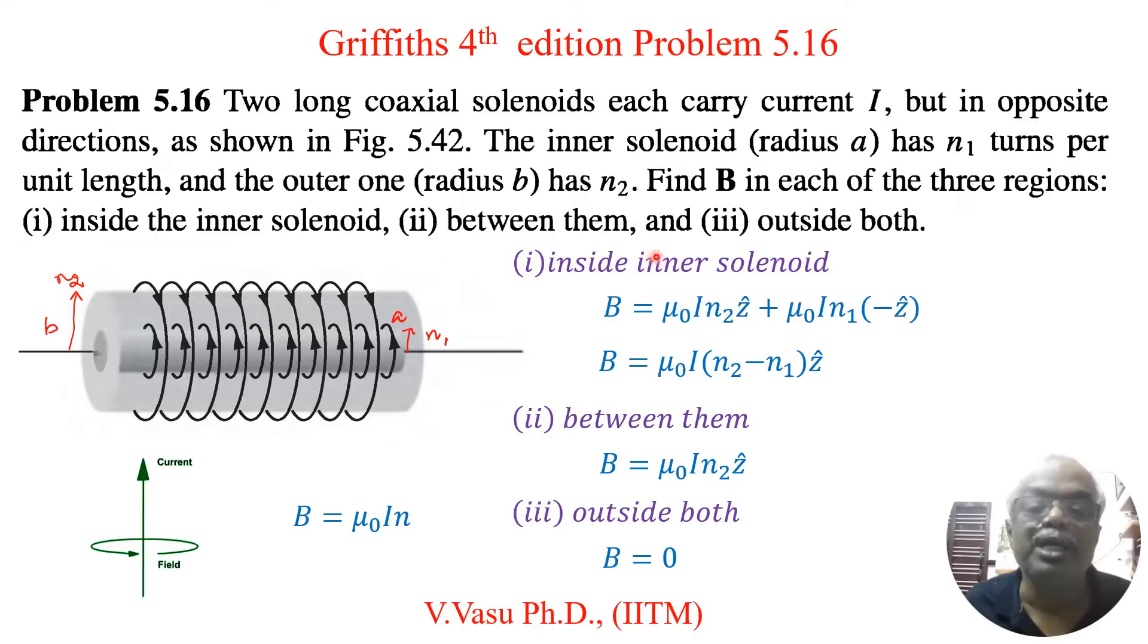Second one is between them and third one is outside both. Now you apply the right-hand rule for both solenoids.